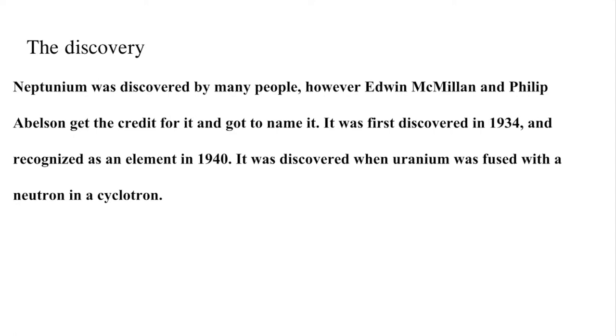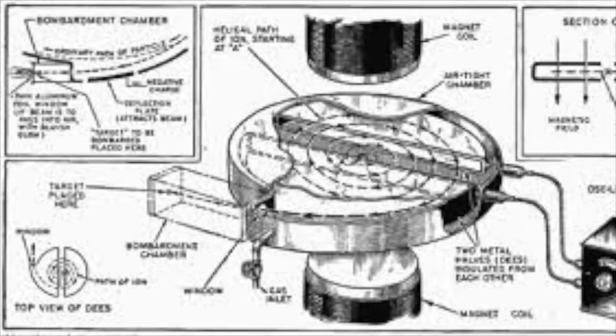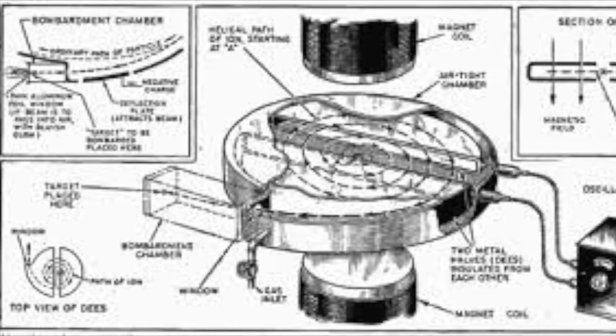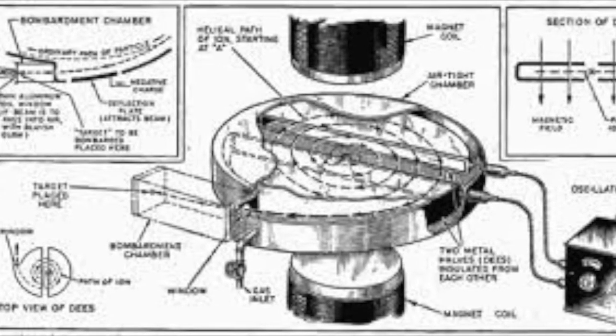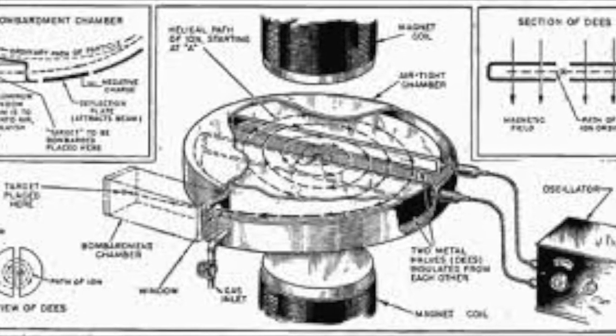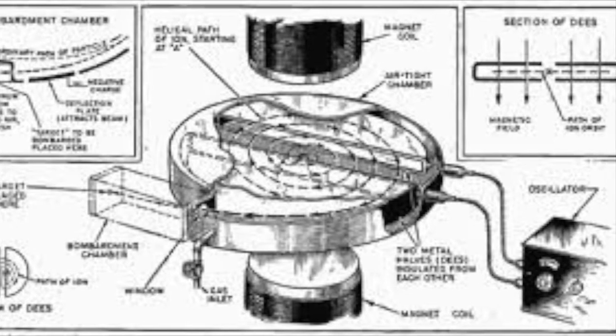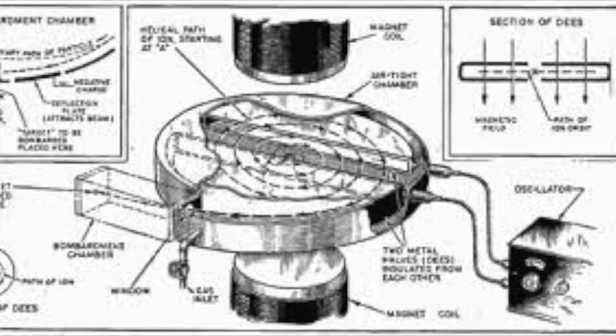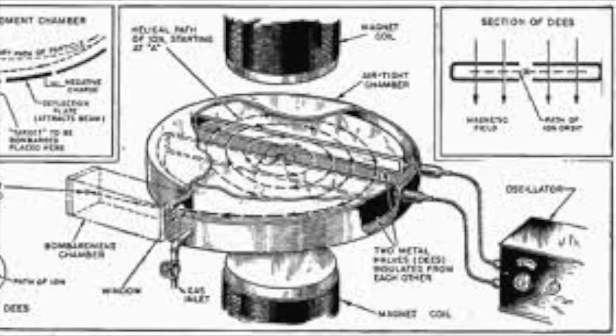It was created when uranium was fused with a neutron in a cyclotron. A cyclotron is a type of particle accelerator that charges particles and then accelerates them in a spiral path. It was created by Ernest Lawrence at the University of California in Berkeley.